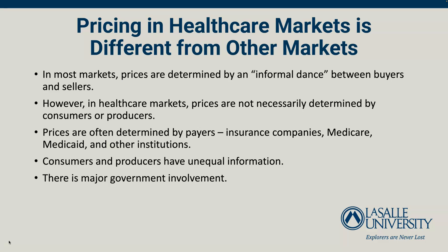In most markets, prices are determined by what Burnell refers to as an informal dance between buyers and sellers. However, in health care markets, prices are not necessarily determined by consumers and producers — they are often determined by payers, including insurance companies such as Medicare, Medicaid, and other institutions, or by individual producers themselves when they have considerable market power. In really competitive marketplaces, consumers have access to all available information, but in health care, where there is not always great transparency regarding prices, consumers and producers have unequal information. There is also major government involvement, though it is not as extensive in other sectors of the economy as it is in health care.